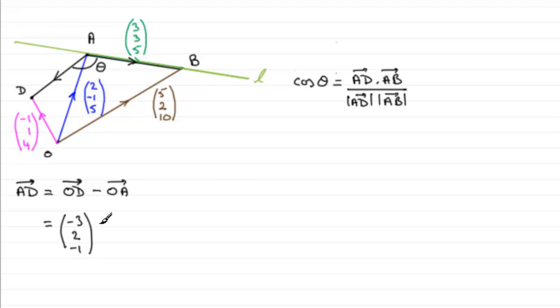What else do we need? Well, we need the magnitude of our vectors. We need the magnitude of the vector A to D. And if you're trying to find magnitudes of vectors, all we need to do is do the sum of the squares of the components and then root them. You can drop off the negatives, it doesn't matter. So for the magnitude of A to D, it is 3 squared plus 2 squared plus 1 squared. And if you work that out, that comes to the root of 14.